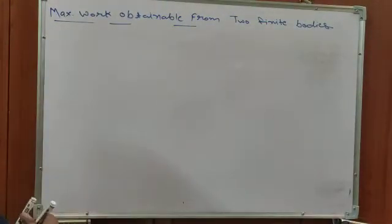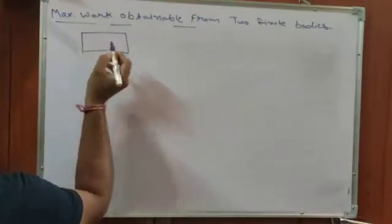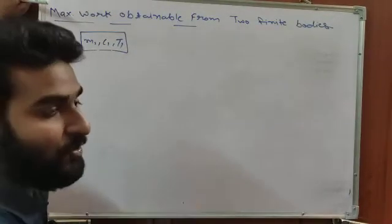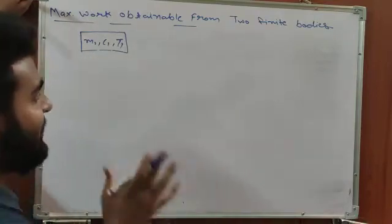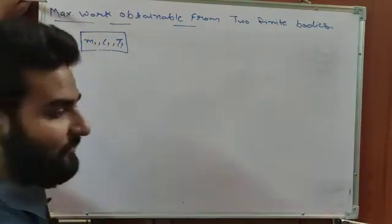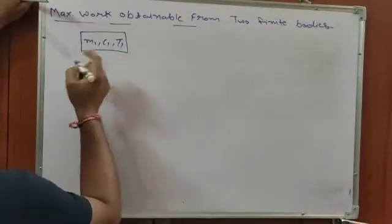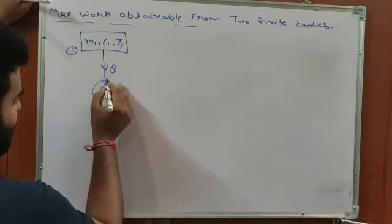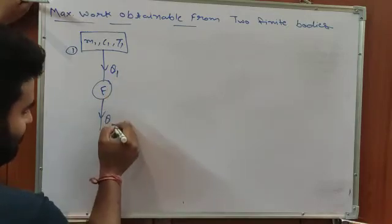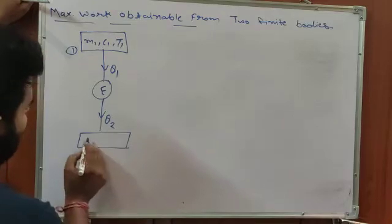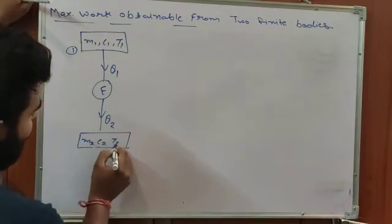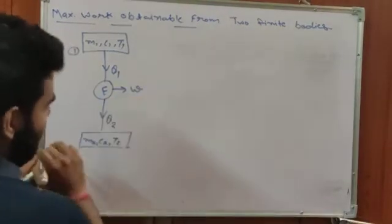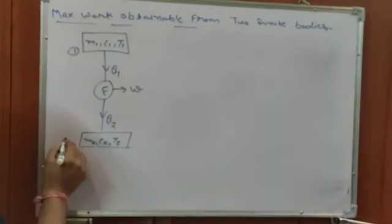Let we have a body which has properties M1, C1, T1. These are finite bodies, not infinite — these are not a source or sink, these are just bodies. So temperature is fixed and mass is fixed. This body gives some energy to a reversible engine, which extracts some energy to another finite body with properties M2, C2, and T2. We are getting some work from this engine when operating between these two bodies.